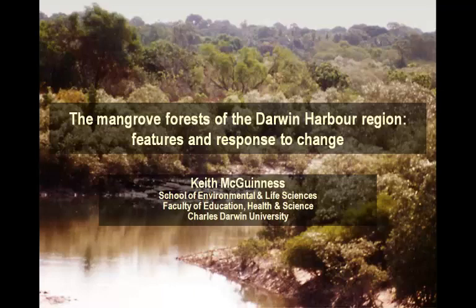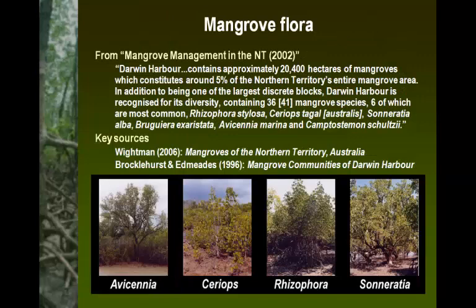Down the bottom here I've got four of the commonest tropical mangrove species. Avicennia is a species found widely around Australia and is one of only two commonly found in temperate regions. It tends to occur widely throughout the forest, so it can be at the back, middle or down towards the water.